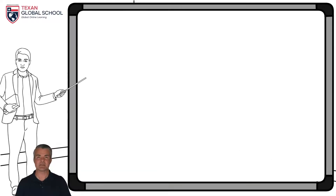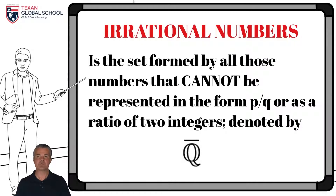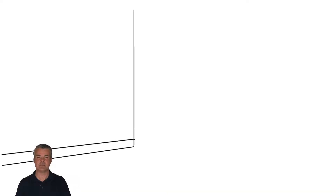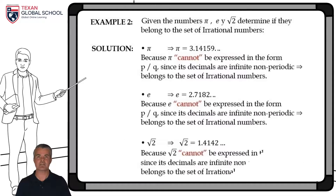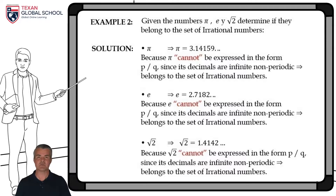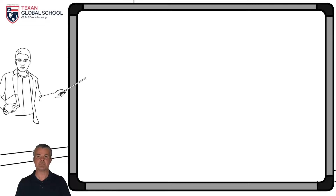On the other hand, the set of irrational numbers is another subset of real numbers, which is conformed by all those numbers that cannot be represented in the form p divided by q. It is the complement of Q. In the following example, we will analyze whether the given numbers belong to irrational numbers. As previously studied, the number pi, whose value is 3.14159, etc., cannot be expressed in the form p divided by q, since it has infinite non-repeating decimals. Hence, it belongs to the set of irrational numbers. Another example of an irrational number is the number e, whose value is 2.7182, also with infinite non-repeating decimals. The square root of 2 is another example of an irrational number whose infinite non-repeating value starts at 1.4142. Finally, we define the set of real numbers as composed by the union of the set of rational numbers and the set of irrational numbers.